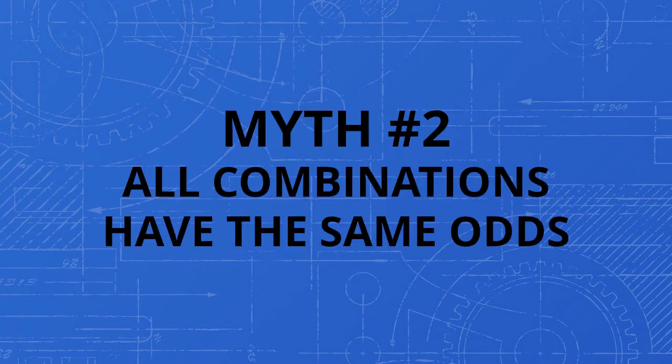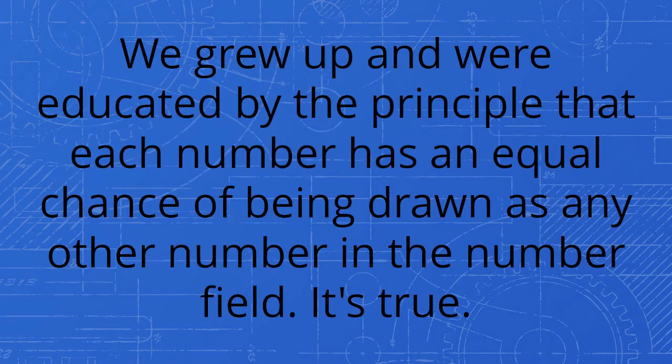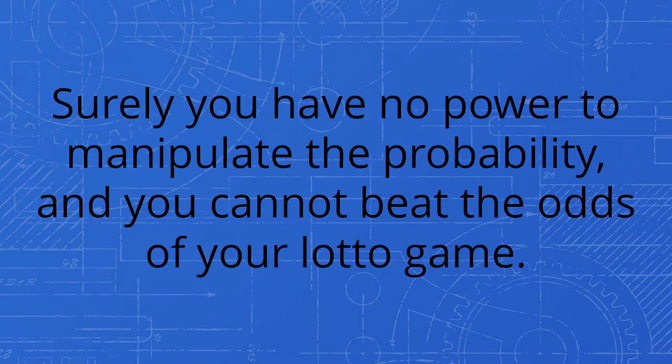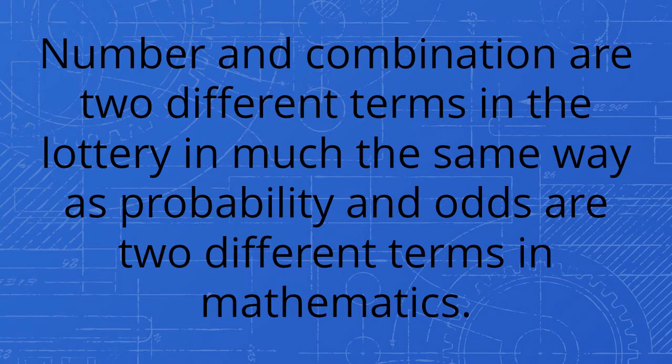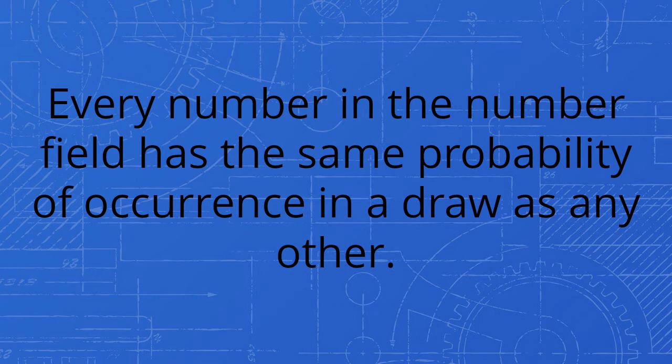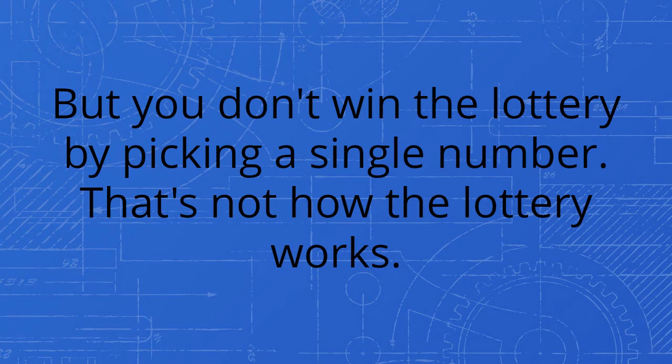Myth number two: all combinations have the same odds. Understand that this traditional belief is the one restricting you from looking at the lottery from a different perspective. We grew up and were educated by the principle that each number has an equal chance of being drawn as any other number in the number field. It's true. However, that doesn't mean you are helpless. Surely you have no power to manipulate the probability and you cannot beat the odds of your lotto game. Nonetheless, you have the power to choose your odds. Number in combination are two different terms in the lottery, in much the same way as probability and odds are two different terms in mathematics. Every number in the number field has the same probability of occurrence in a draw as any other. It's a mathematical fact.